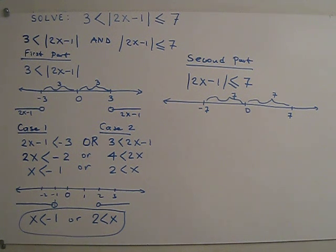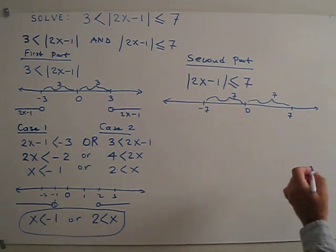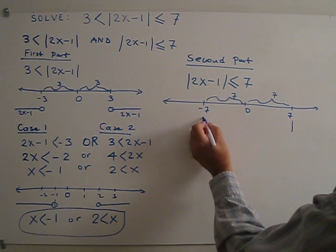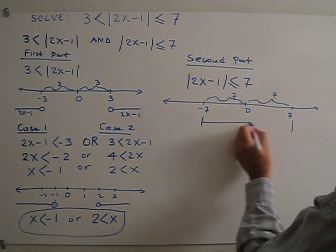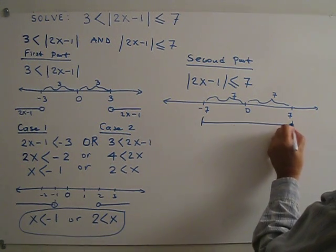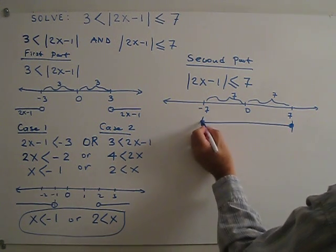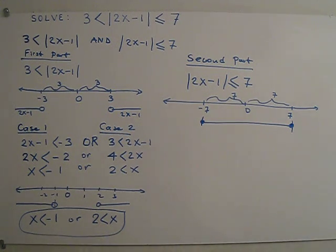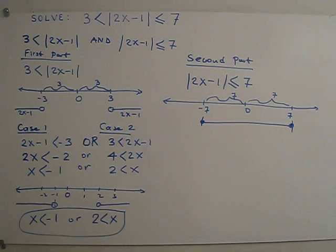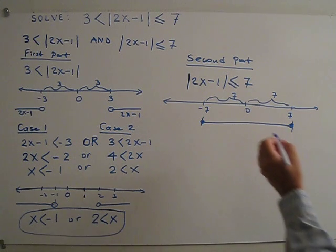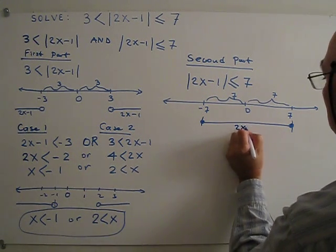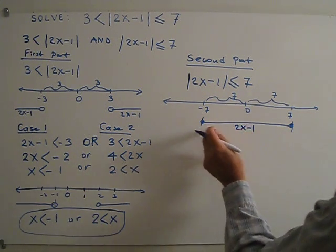2x minus 1 must be less than or equal to 7. Since there is an equal sign, we use a closed dot. We are looking at this area — so 2x minus 1 must be in between negative 7 and positive 7.